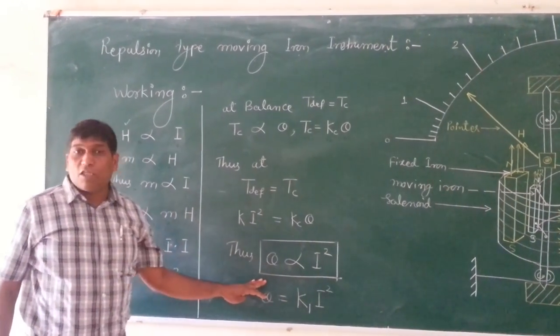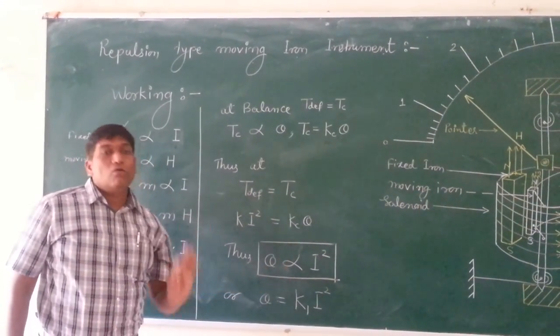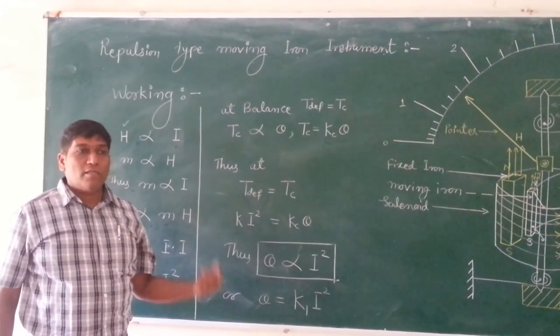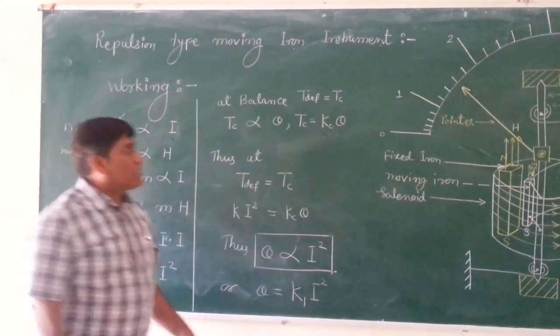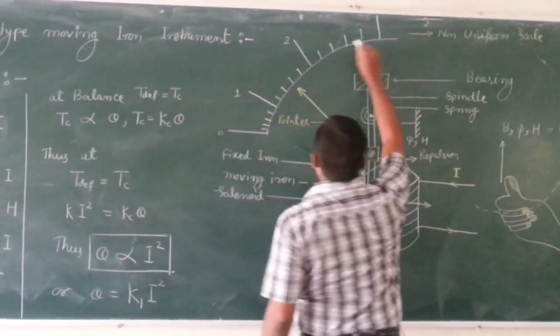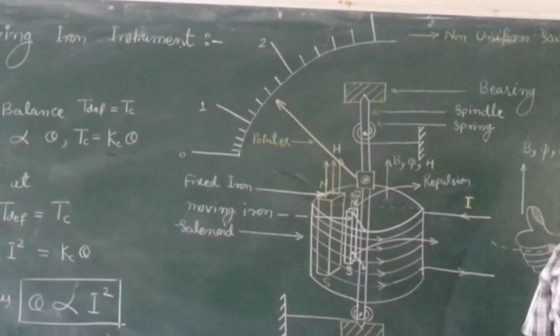And thus, the deflection will be proportional to I square. The very simple principle is that, because of this, the scale of the instrument is non-uniform. That's all.